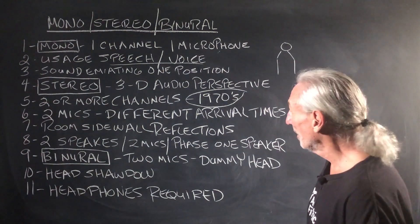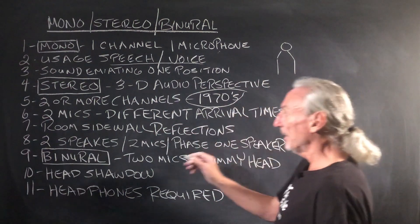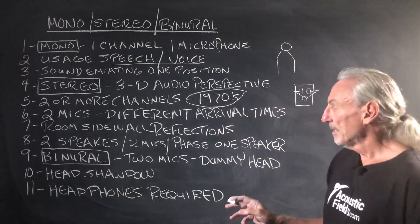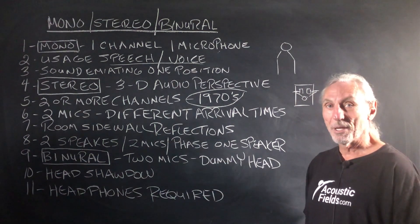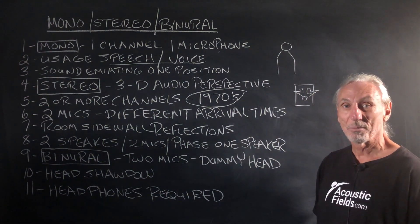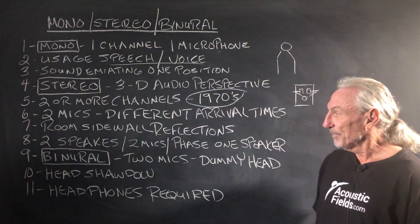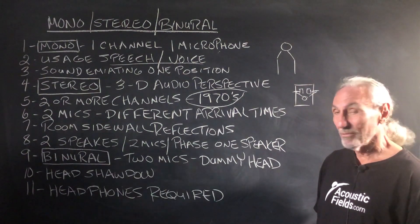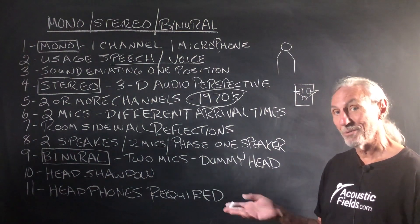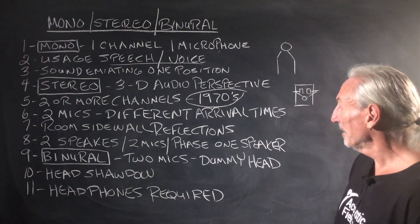So even though the source was created out of balance with different microphones and different arrival times, it's an interesting paradigm. Two mics, different arrival times, room sidewall — we talked about that. Two speakers, two mics. You have to be careful about phase. If you just use one speaker, you're going to get phase issues with stereo. Just like if you play mono over stereo, you're not going to get stereo — you're going to get mono over two channels.